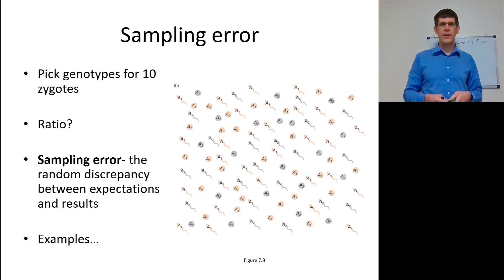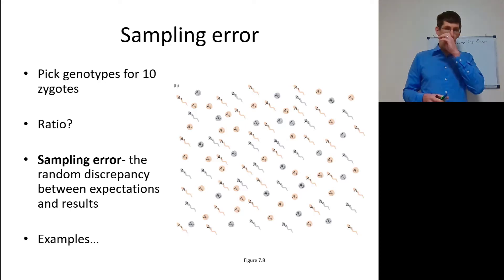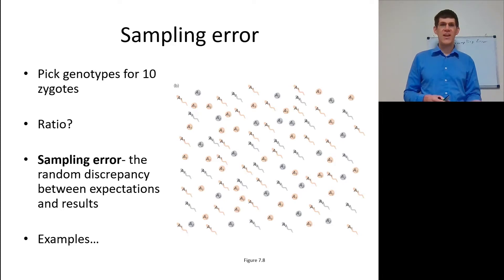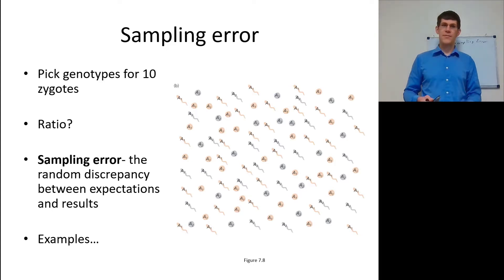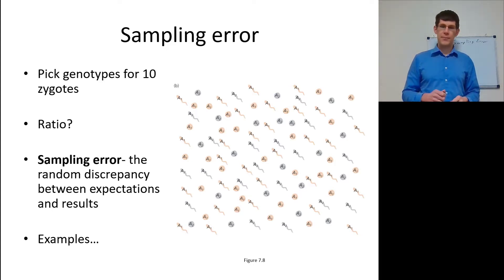If you were to pick those genotypes, you get a certain ratio. The sampling error is going to be the random discrepancy between expectations and results. If it's a significant discrepancy, that's a significant sampling error. Let's look at some examples of this sampling error in practice.